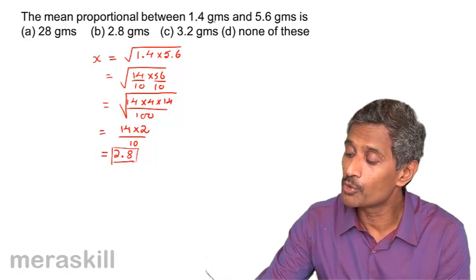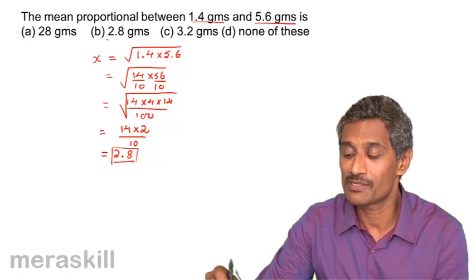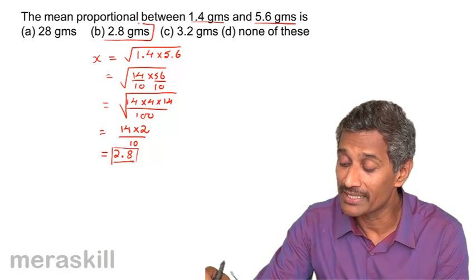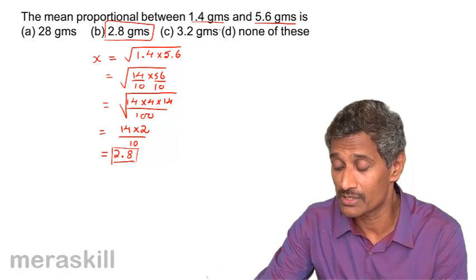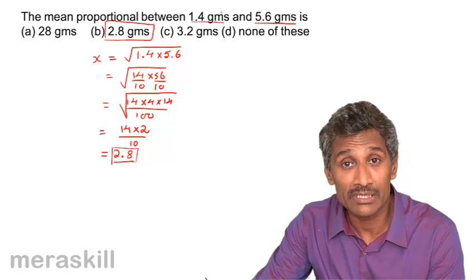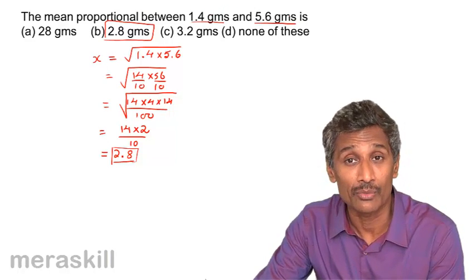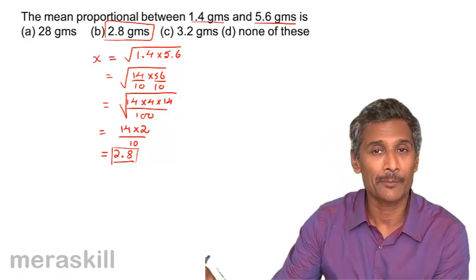So, the mean proportional between 1.4 grams and 5.6 grams is nothing but 2.8 grams. Again, remember, see that you check the units. The units have to be taken care of. If this is given in kilograms, you need to convert it to grams and then you can find the mean proportional. So, you have to be a little extra alert there.